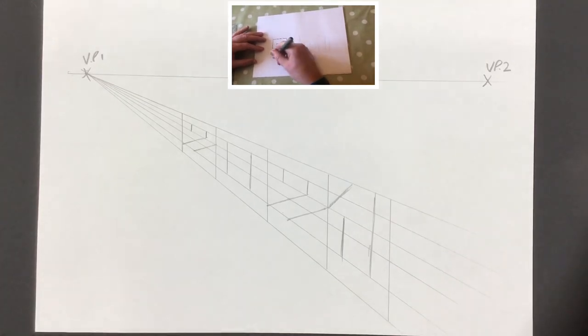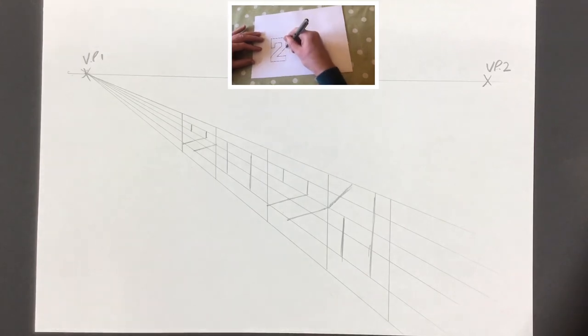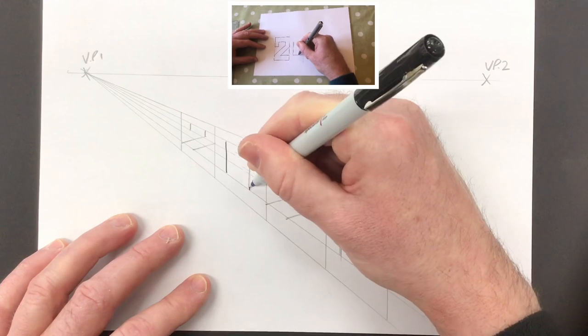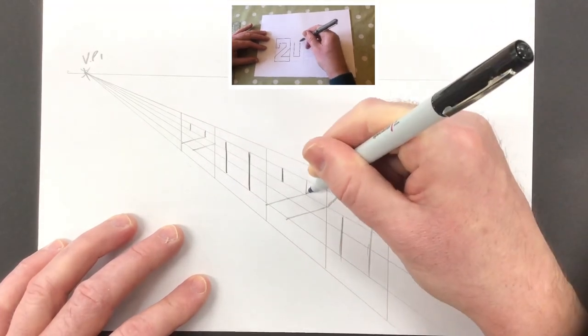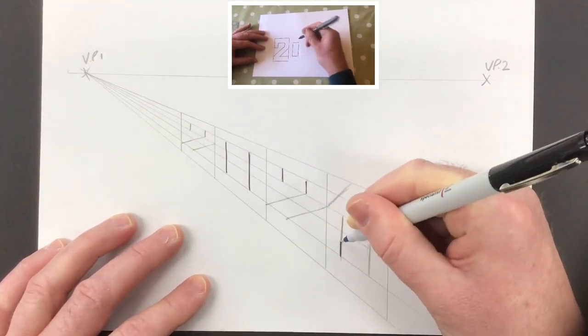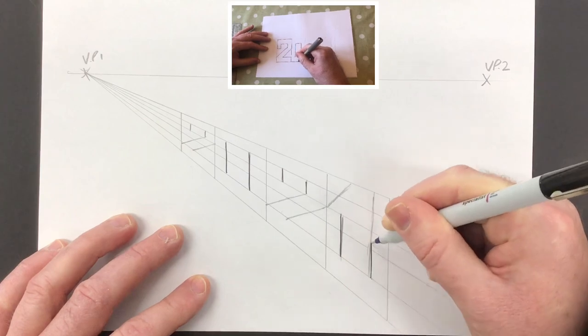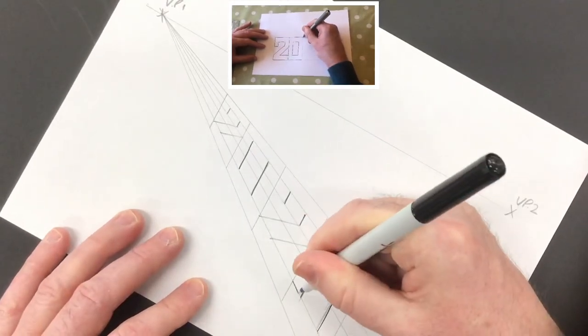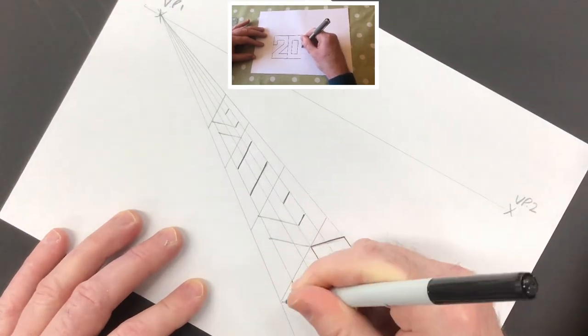If you have a fine liner or ballpoint pen, you can go over the numbers. I've chosen to freehand rather than use a ruler because sometimes the ink gets trapped under the ruler and it can smudge, but it's up to you.